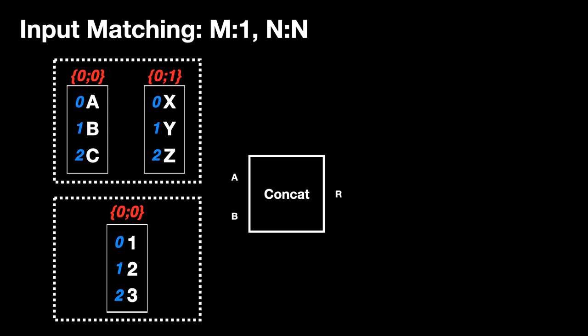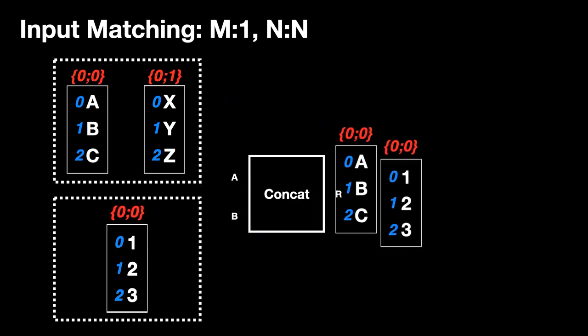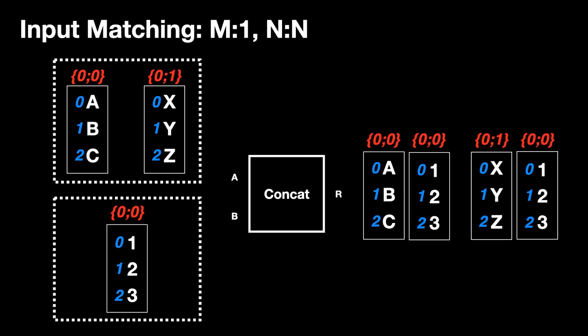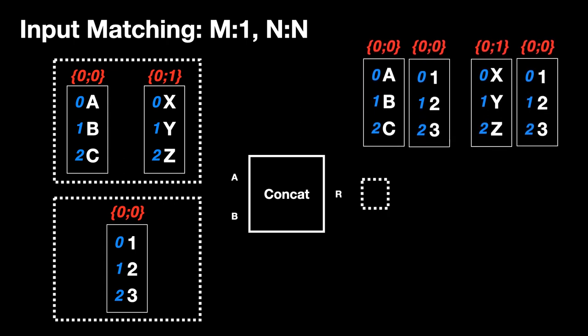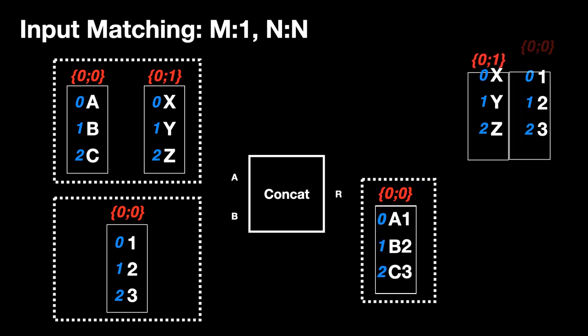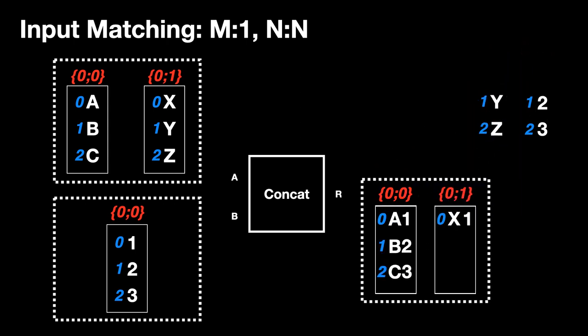So in this scenario we have two branches in a and one branch in b. The branches in a have three items and the branches in b also have three items. First we match the branches and since there are two branches in a but one in b it reuses the single b branch across all the a branches. Then it matches the items in each branch pair.